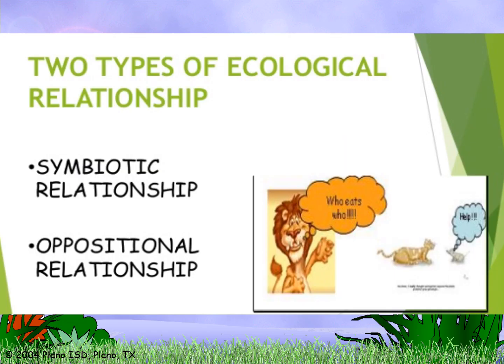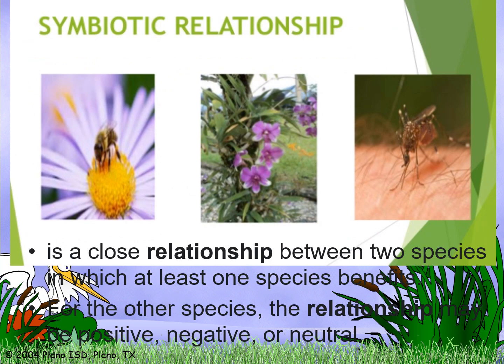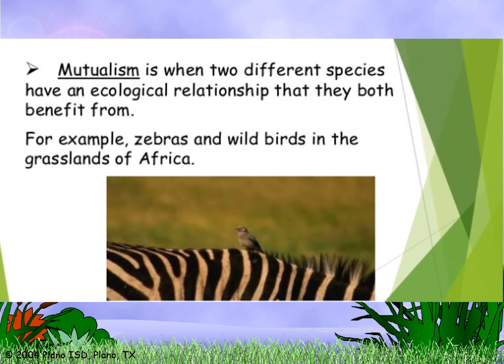There are two types of ecological relationship: symbiotic and oppositional. A symbiotic relationship is a close relationship between two species in which at least one species benefits. The relationship for the other species may be positive, negative, or neutral. Under symbiotic relationships, mutualism is when two different species have an ecological relationship that they both benefit from.